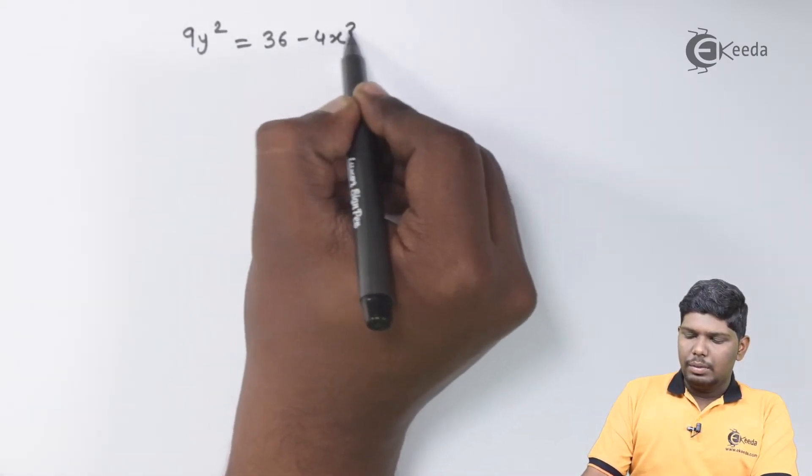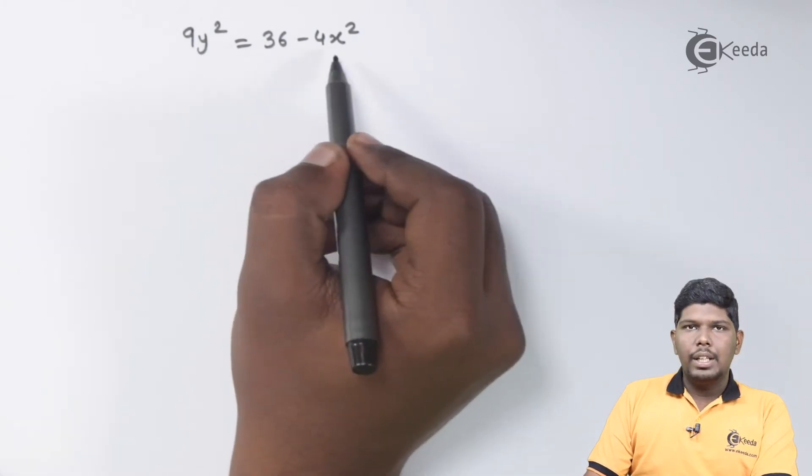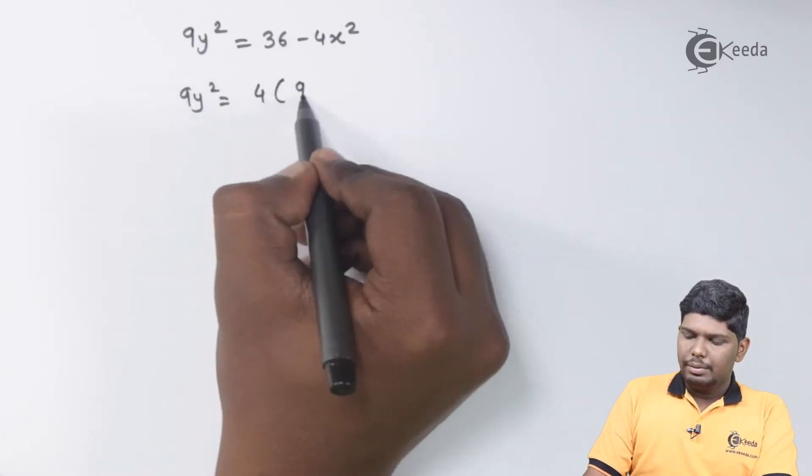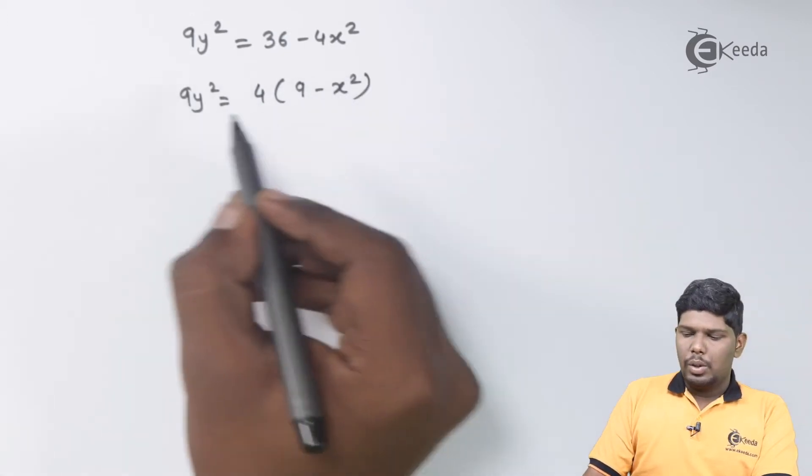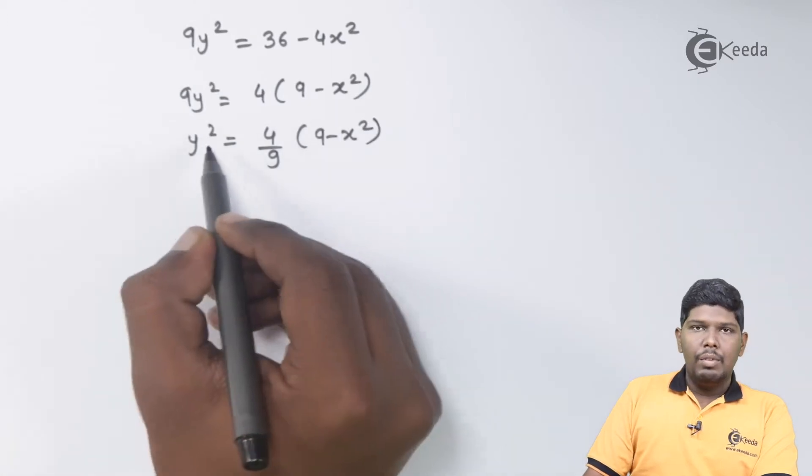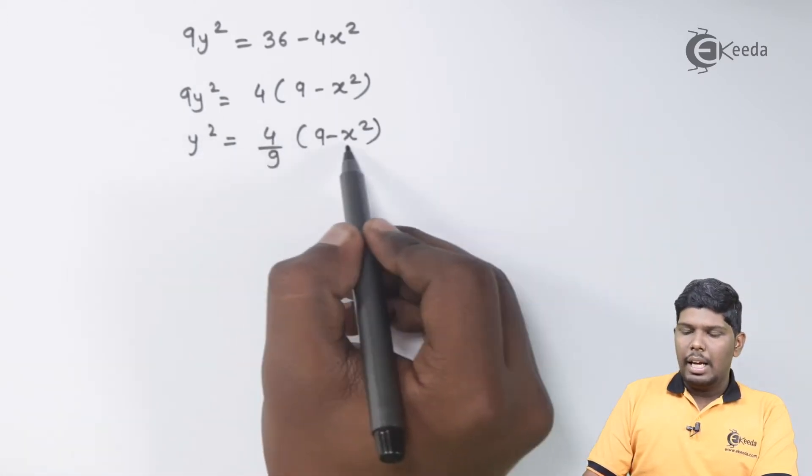9y² will be 36 - 4x². Taking 4 common, we have 4(9 - x²). And dividing by 9, we have y² as (4/9)(9 - x²).